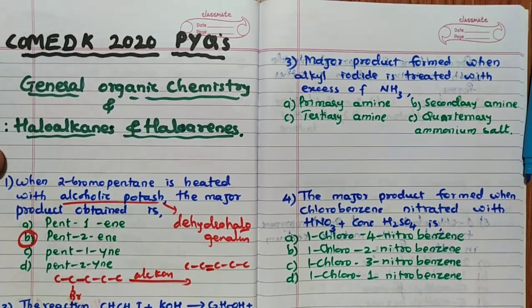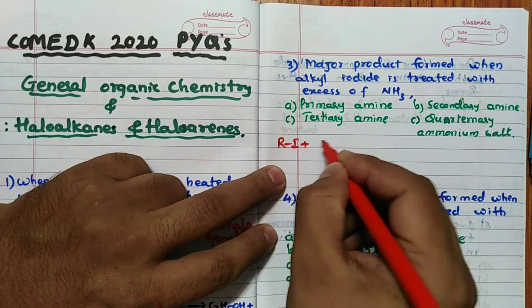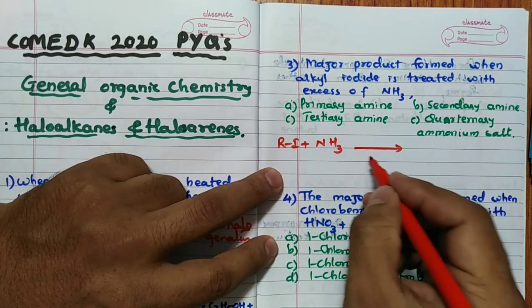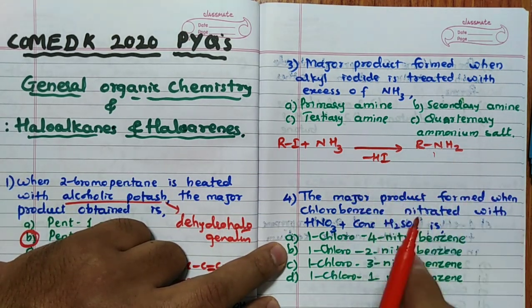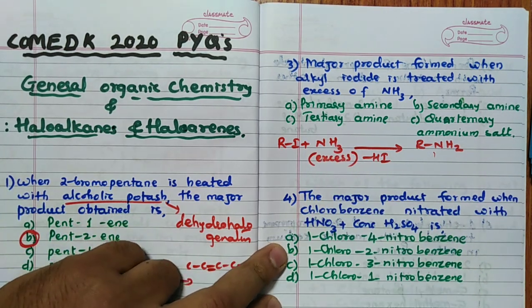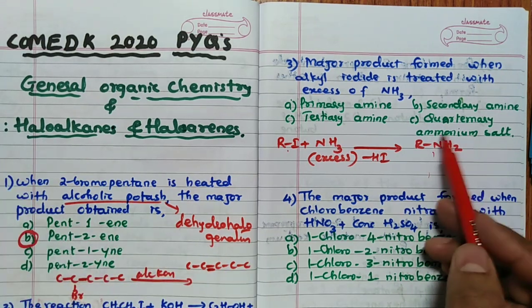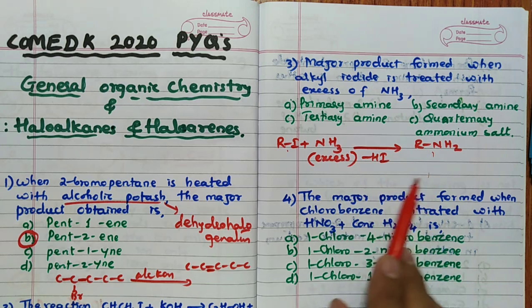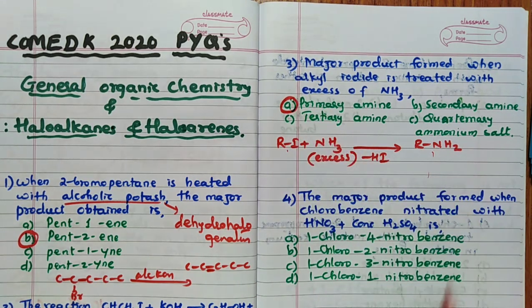Third question: major product formed when alkyl iodide is treated with excess NH₃. RI reacts with NH₃; from H and I, HI is eliminated, giving RNH₂. When NH₃ is in excess, further substitution does not occur and the product does not react further with RI. Therefore, when NH₃ is in excess, the answer is primary amine.